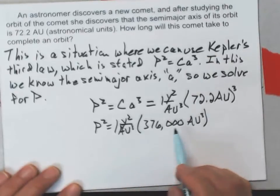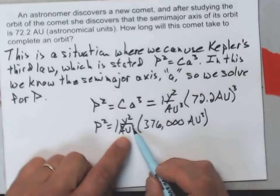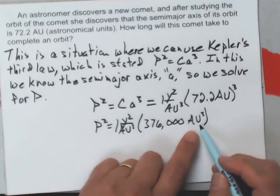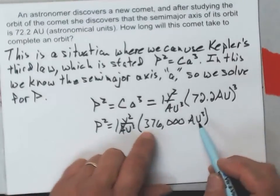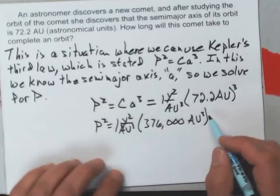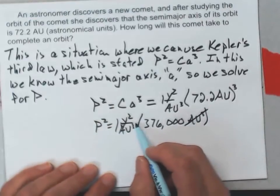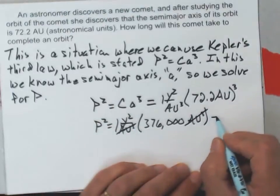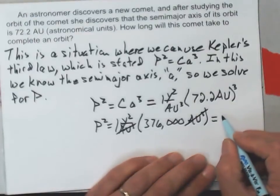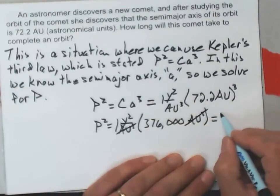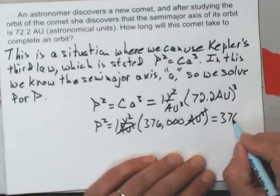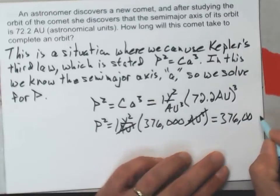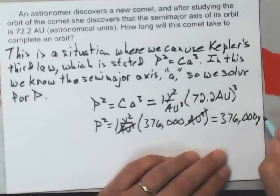Now look at this equation. I've got AU cubed on the bottom of the fraction here, I've got AU cubed multiplying the top of the fraction. These AU cubes will divide with those, and what I end up with is nothing but years squared. So 376,000 years squared.